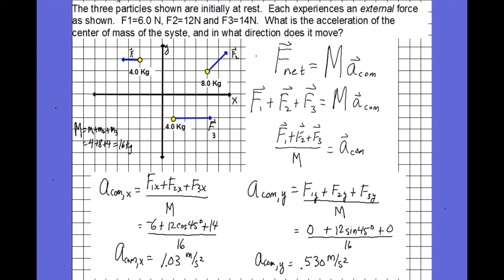Let's look at an example. Let's have a system of particles that consist of three particles: a four kilogram particle, an eight kilogram particle, and another four kilogram particle. These particles are experiencing external forces given in the direction as shown by the blue vectors. F1 is going to be six newtons, F2 is going to be 12 newtons, and F3 is going to be 14 newtons. In the diagram, this angle between our horizontal and F2 is 45 degrees.